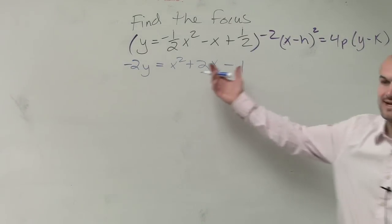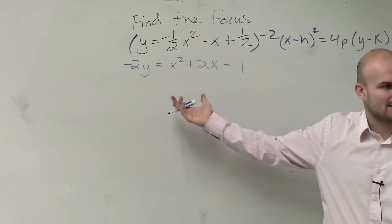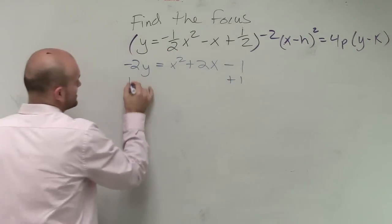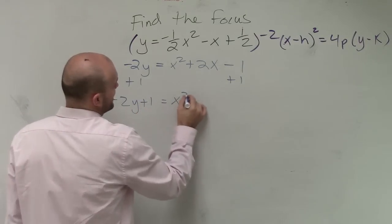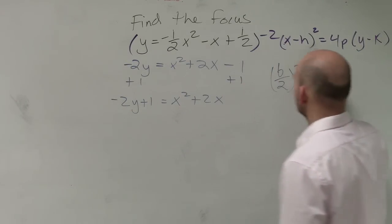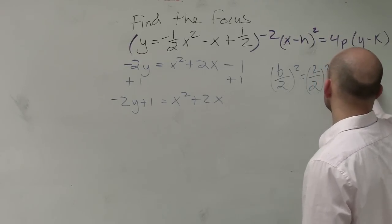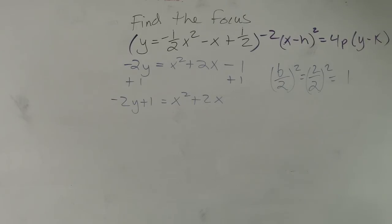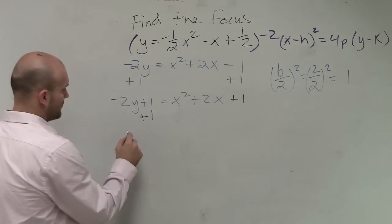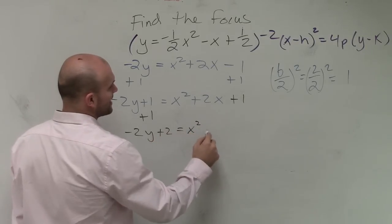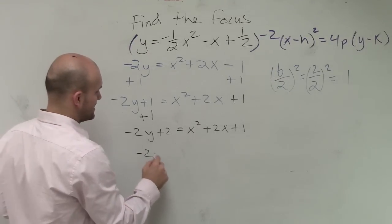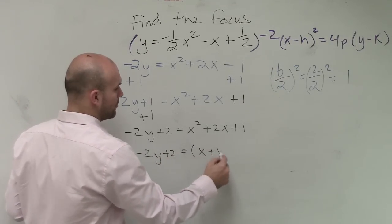And now what we can do is complete the square. So one thing I can do is let's add the 1 to the other side. Let's isolate these terms. So now I have negative 2y plus 1 equals x squared plus 2x. Remember, by completing the square, you take b divided by 2 and squared, which in this case is 2 divided by 2 squared, which equals 1. So I add 1 to both sides. Therefore, I have negative 2y plus 2 equals x squared plus 2x plus 1, which now this is a perfect square trinomial.